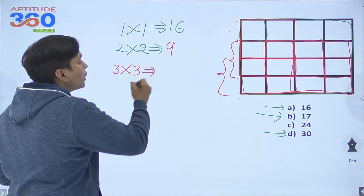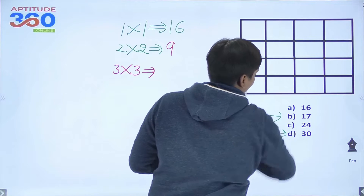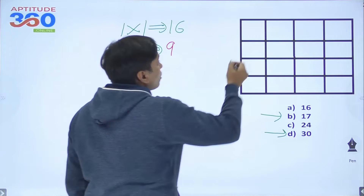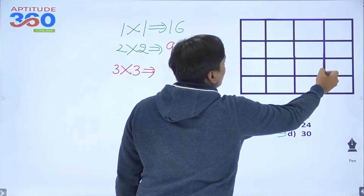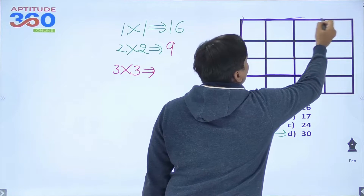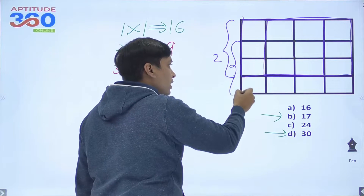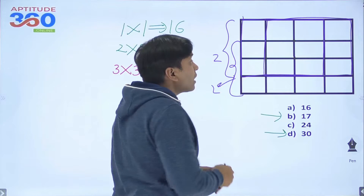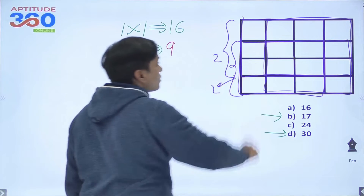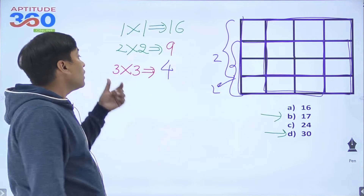How many squares do we get of 3×3 dimension? Let me change the color of the pen so you understand better. The very first square of this dimension is here. The second one is this one. From here to here, you have got 2 squares, and similarly from here to here you will have an additional 2 squares. In total, we have got 4 squares of 3×3 dimension.